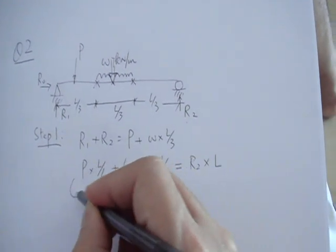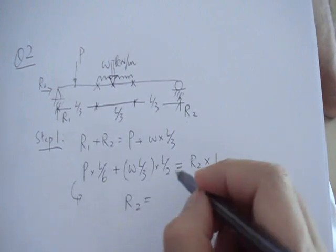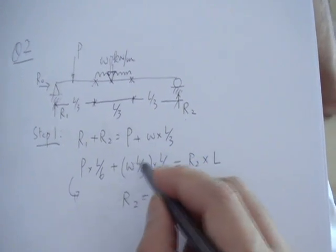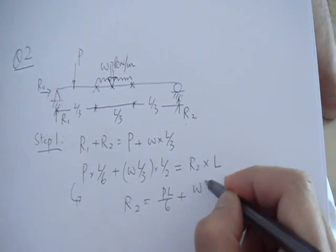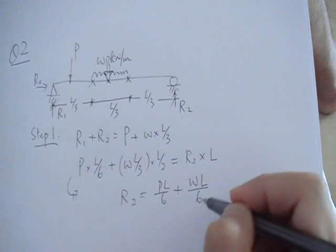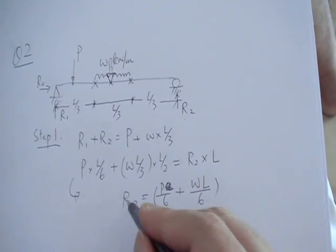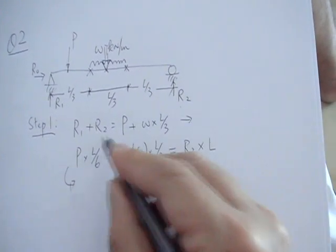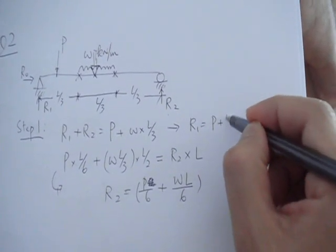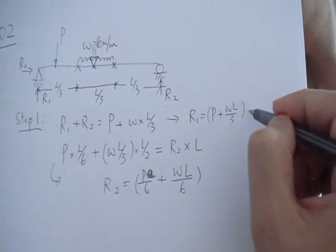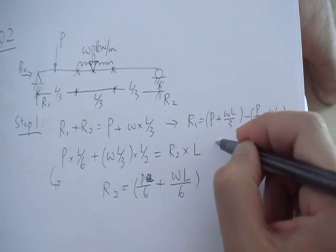So that equals R2 times L. Right away you can tell from the rotational equilibrium, R2 is simply PL over 6 plus WL over 6, divided by L, so this is gone. So that's R2, and from this you calculate R1.